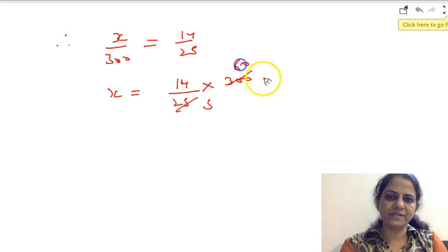5 over 25, 5 over 30, and 12. 14 into 12. 12 fours are 48, 12 ones are 12, plus 4, 16, 168.